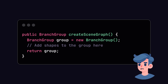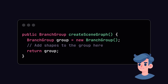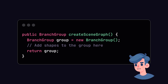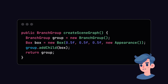The hierarchical structure allows us to arrange our 3D objects in a scene. We will create a simple BranchGroup to hold our 3D objects. The BranchGroup is the root node of our scene graph, and we will add shapes to it later in the tutorial.